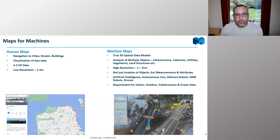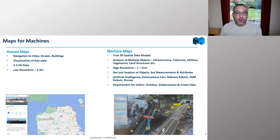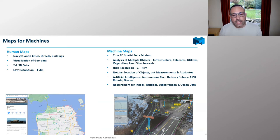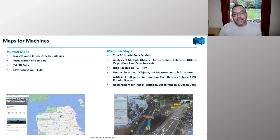For most human applications that's totally fine — we can decide where we want to walk or drive. But machines have different requirements for map data. Machine maps are very much about creating true 3D spatial models of the environment — analyzing everything visible in a given area. In urban environments that can be infrastructure, telecoms, utilities; in non-urban environments, vegetation and land structures. We're doing this at very high resolution: one to four centimeters — providing not just location of objects, but also measurements, features, and attributes.